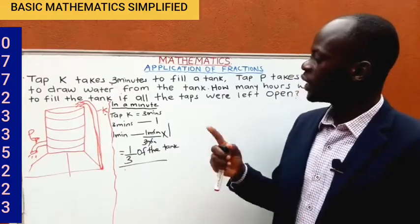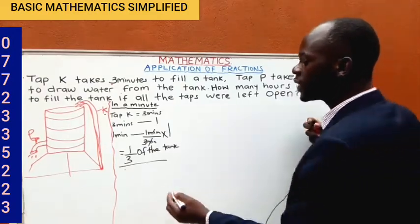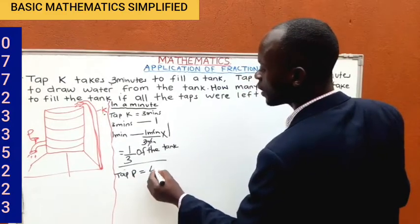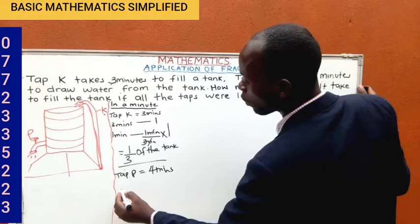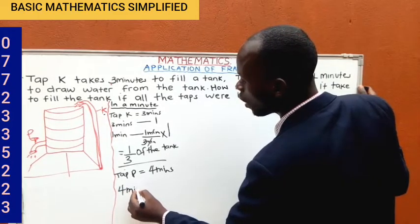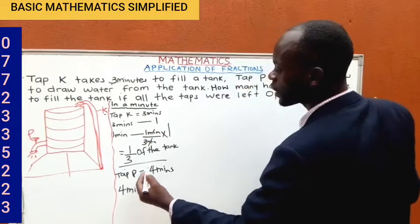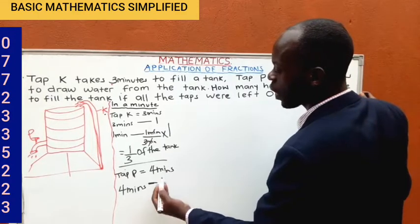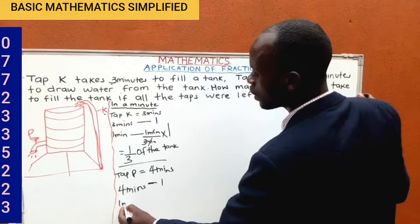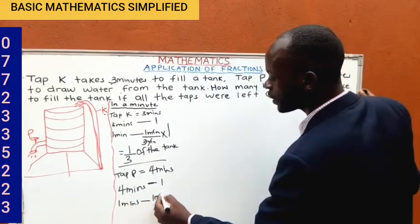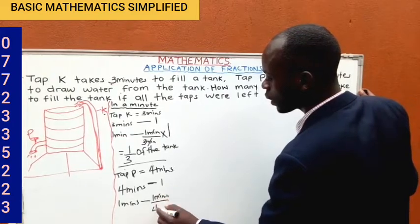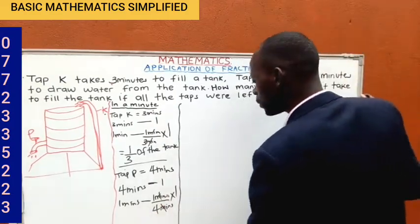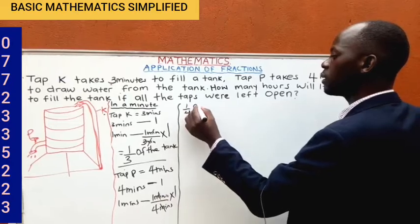In the same one minute, let us calculate for Tap P. Tap P draws the whole tank in four minutes. What part of the tank is drawn in one minute? Using direct proportion: one minute divided by four minutes, times one whole tank, equals one-quarter of the tank. So Tap P draws one-quarter of the tank in one minute.